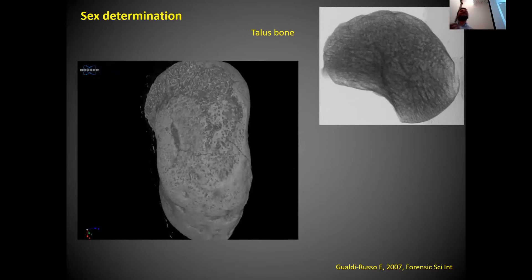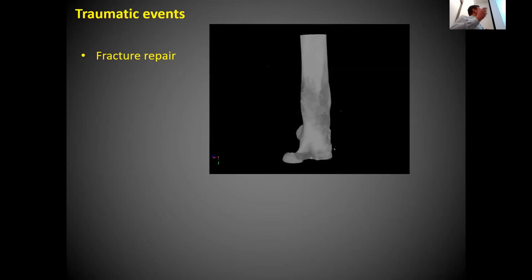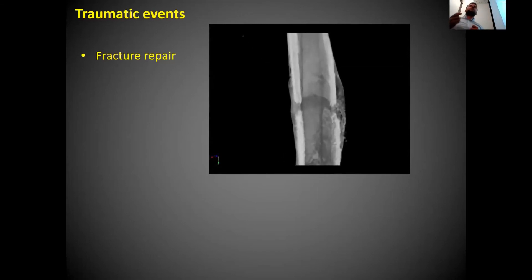Quite recently we scanned talus bone samples. There's a paper hopefully to be published soon in which the authors developed an algorithm — you don't have to measure everything manually; you place the bone in a template and the software tells you if it's from a male or female.